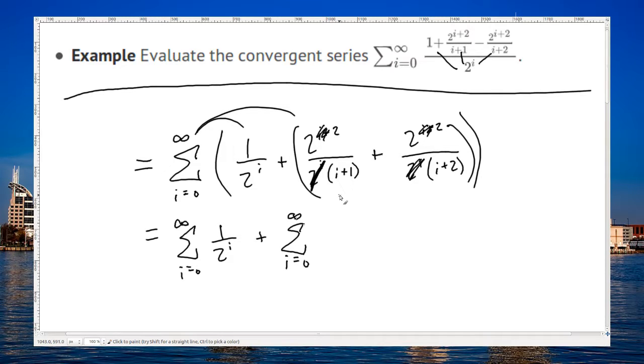So what is that? 2 squared is 4 over i plus 1, plus, that's not a plus, is it? That's a minus. So let me fix that. The original problem had a minus, so this is a minus. So we have 2 squared over i plus 1, minus, now I've got that correct there, 4 over i plus 2.